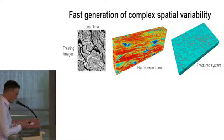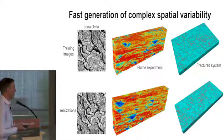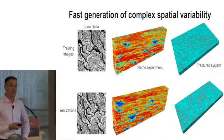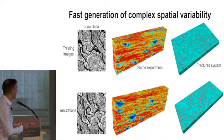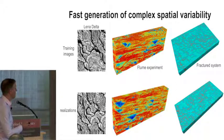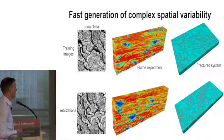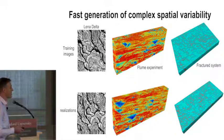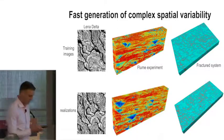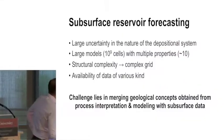So that leads to the fast generation of complex spatial variability from existing spatial variability that you may have obtained. Here we see three examples, and using these two algorithms, realizations. I can generate a million more of that. You may have a delta, here we see a flume experiment, or a fractured system, which today is very important. We can generate many realizations. For example, this year's a six million cell model is generated in four seconds.